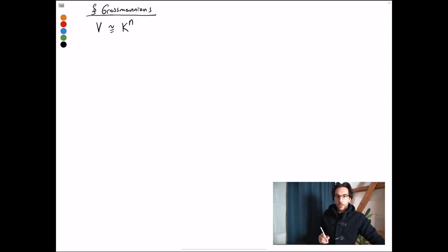So as usual, k will be a field. And we want to study m-dimensional subspaces of v. And that's the Grassmannian.